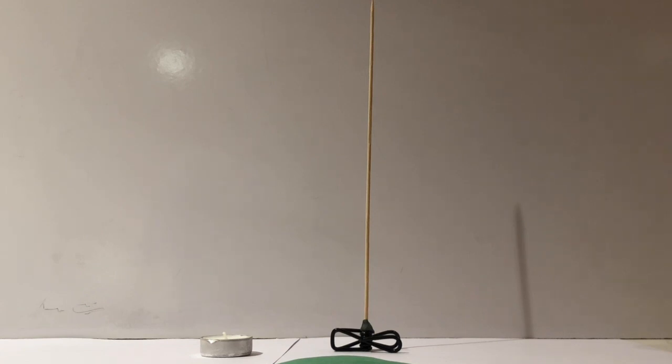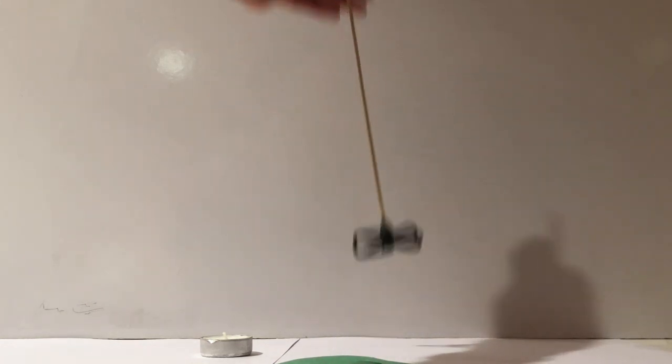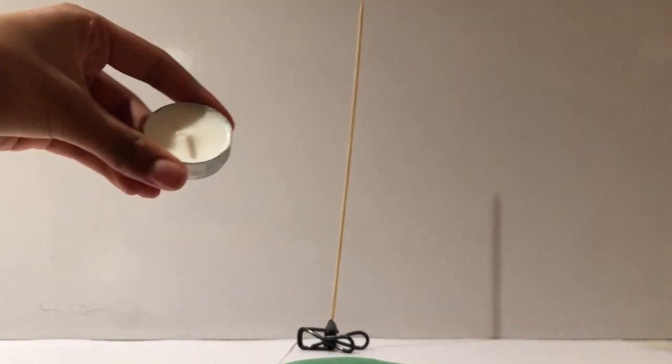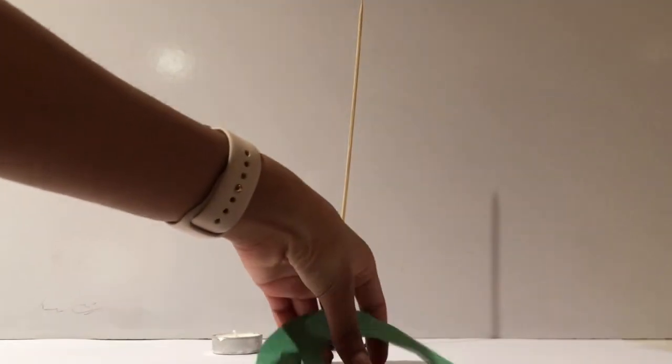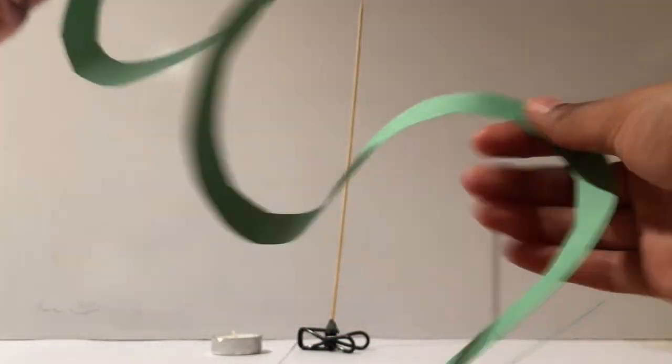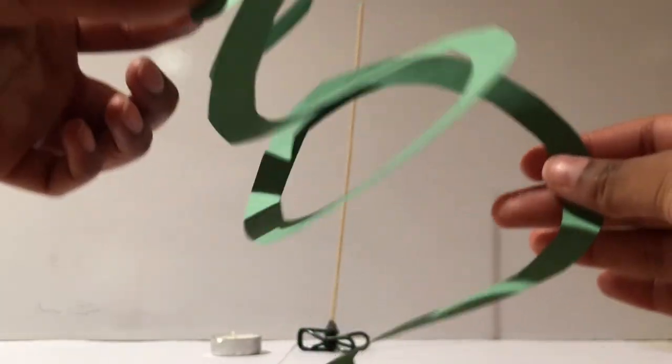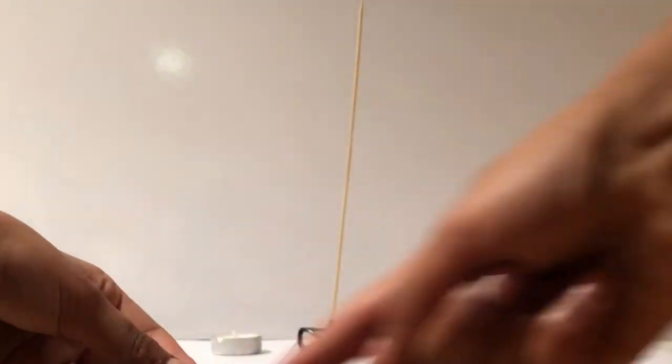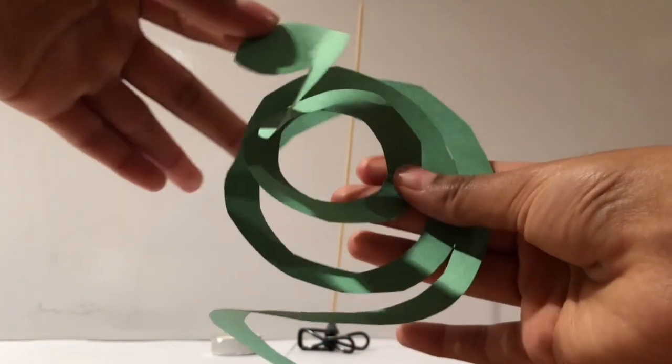All you need to do the experiment is a bamboo skewer attached to a clothespin to make it more sturdy, attach it with putty. You need a candle and something to light it with, and you need to make a paper snake. All you need to do to do this is to cut a circle in a piece of construction paper and then to cut around and around and around until you get to this.